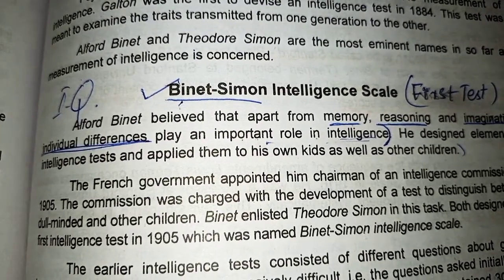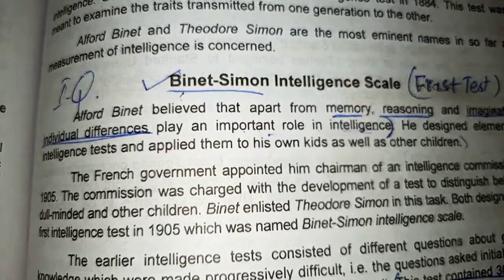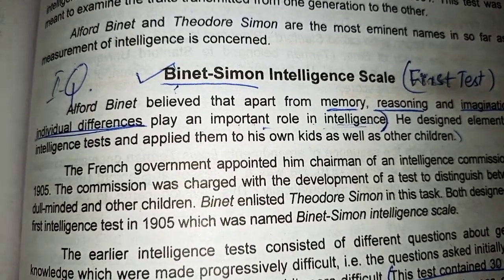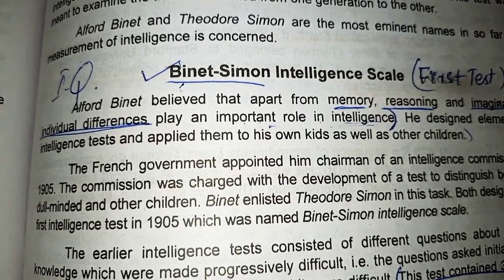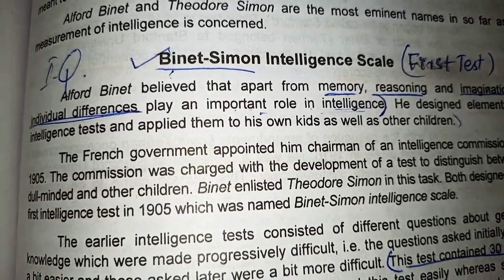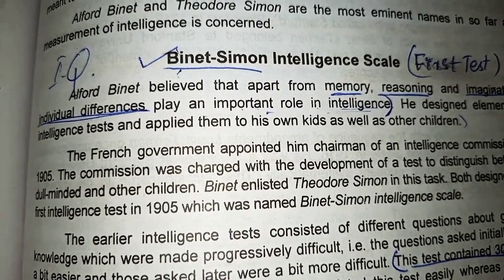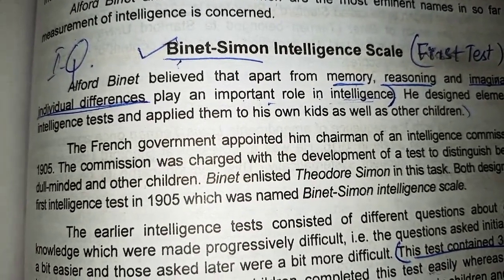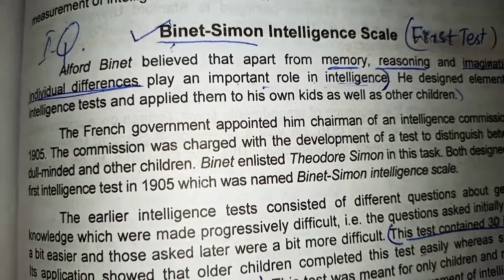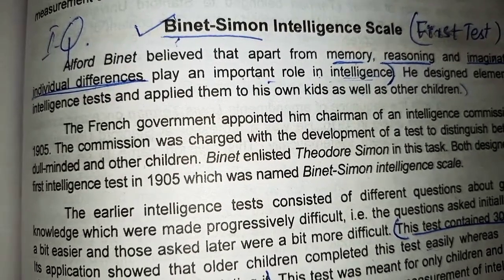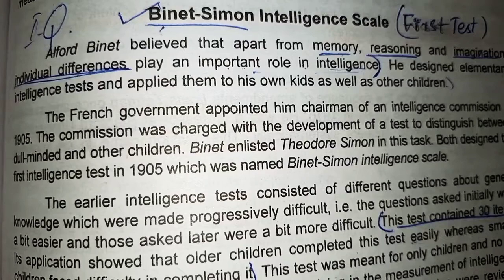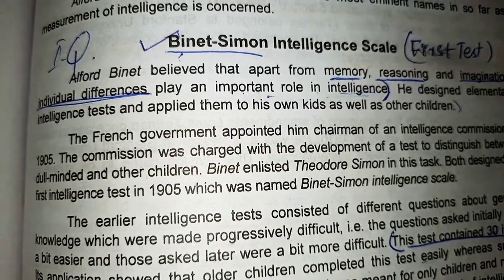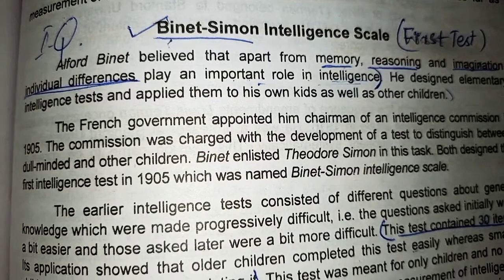But the first proper intelligence test was developed in 1881 when the French government passed a law making school attendance compulsory for all children. This created problems for school teachers because they needed to identify children who were not capable of benefiting from a regular school classroom, in order to provide them with special classes. For this work, Alfred Binet was appointed to investigate this problem, and the government asked Binet and Simon to create a test to detect slow learners who could not attend regular school classes.